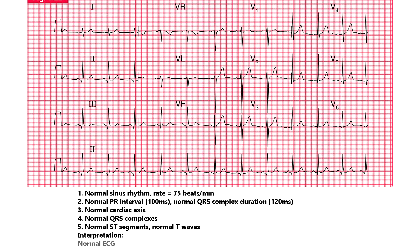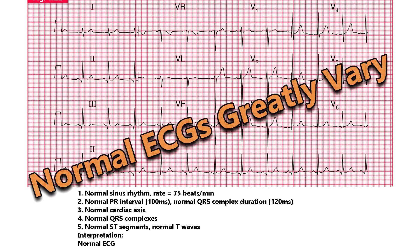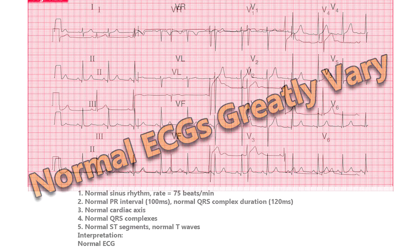Interpretation: Normal ECG. If the ECG is abnormal, we will have to mention the abnormalities present in it. One of the main problems of ECG reporting is that there is quite a lot of variation in the normal ECG.